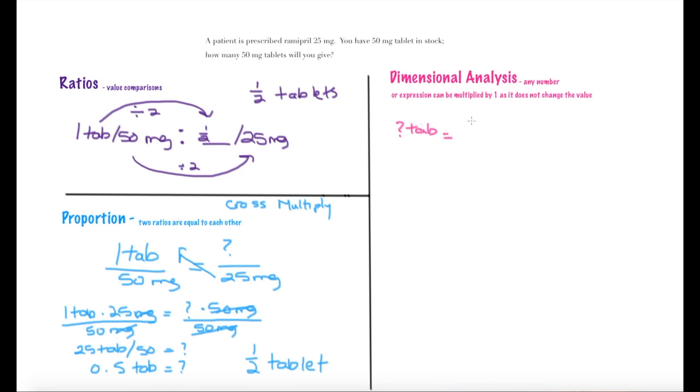Then I'm going to put in what do I know already. Now I could write 50 milligrams over 1 tab or 1 tab over 50 milligrams. I want tabs in the numerator, so I choose this method. Dimensional analysis has us working in diagonals.